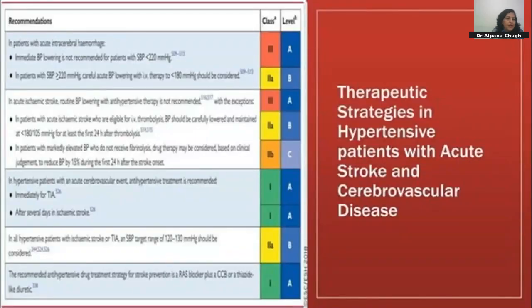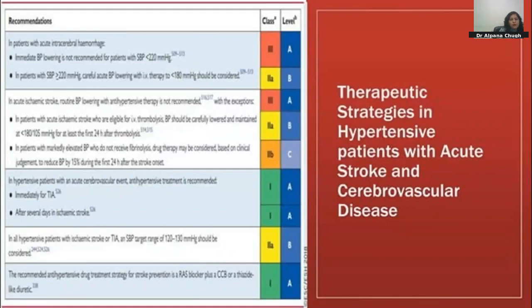In stroke patients, for hemorrhagic stroke presenting within the first six hours with BP around 220, lower BP to 140/90. If presenting after six hours, gradually lower BP. For ischemic (thrombotic) stroke, gradually lower BP to less than 180/105; there should be no rapid decrease in BP if thrombolysis is planned. For secondary prevention follow-up after stroke, a RAS blocker plus a CCB or thiazide-like diuretic is preferred.